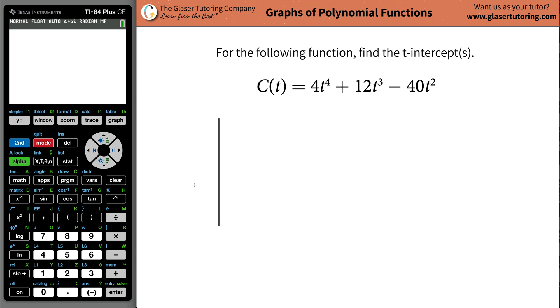What does it mean by x intercepts or t intercepts? So pretend you have a function. If this is the function, and we're plotting x or t along the horizontal axis, and we're plotting the y or the function's value, in this case C(t) along the vertical axis, which should be the case, by the way.